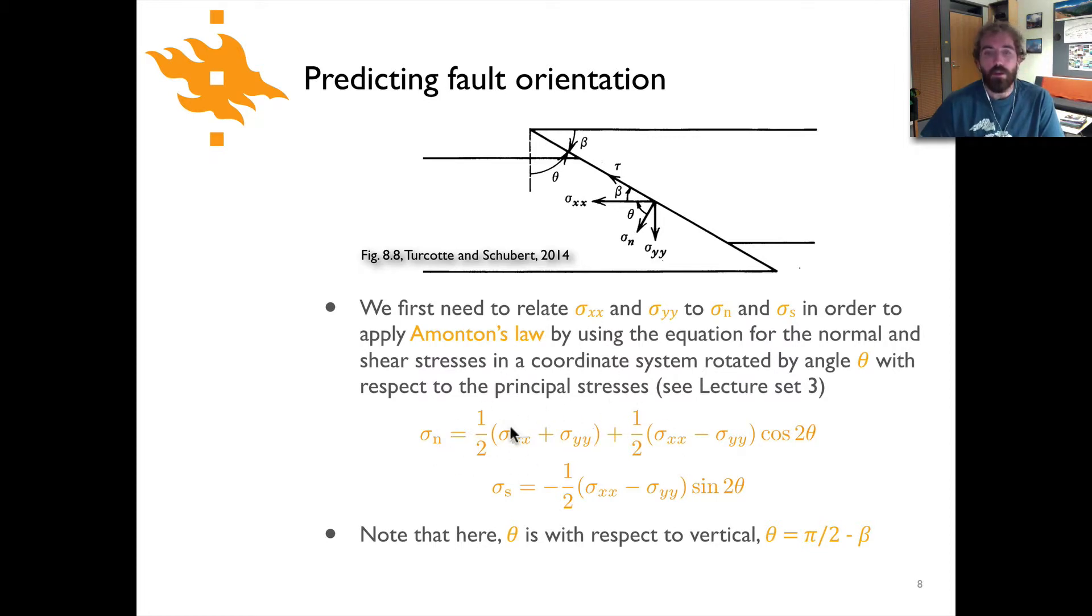And so we can take our normal stresses in the x and y coordinate system and rotate them by some angle theta to get the normal and shear stresses using the equations here. So you can see for the normal stress for instance that we've just got one half the sum of sigma xx plus sigma yy plus one half the difference of those two times the cosine of two theta. And for sigma s it's simply minus one half times the difference between sigma xx and sigma yy times the sine of two theta. Where here theta just to note is with respect to vertical and so theta is then going to be equal to 90 degrees or pi over two minus the dip angle of the fault beta.